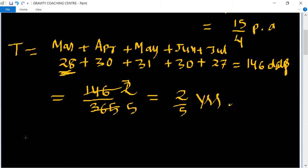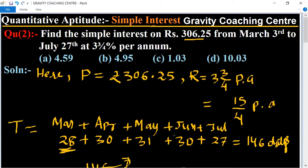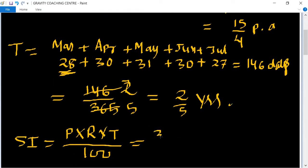Therefore, simple interest: we know the formula is P into R into T upon 100.